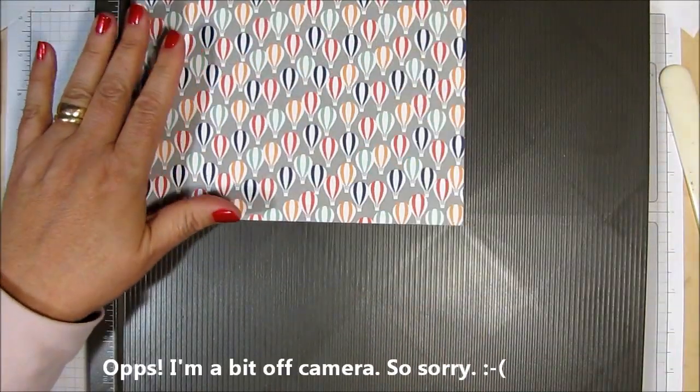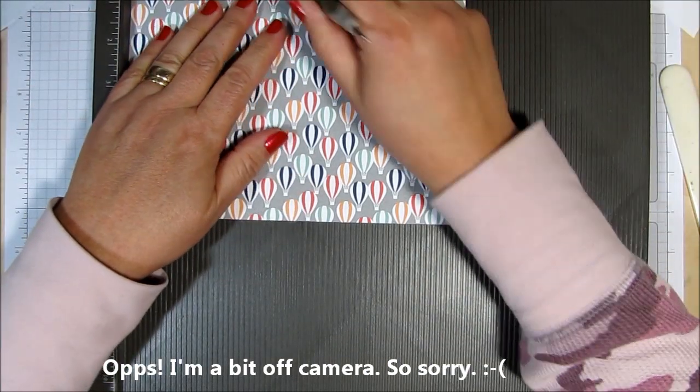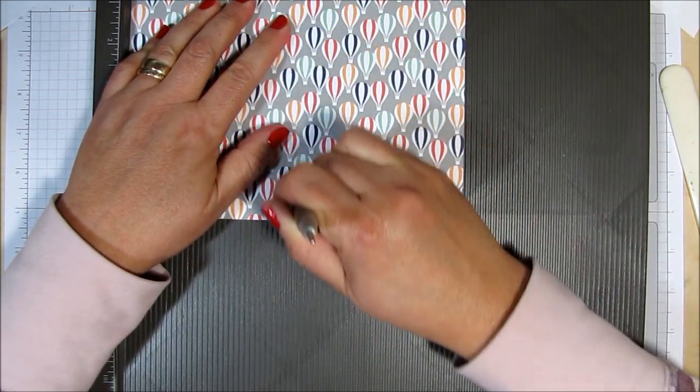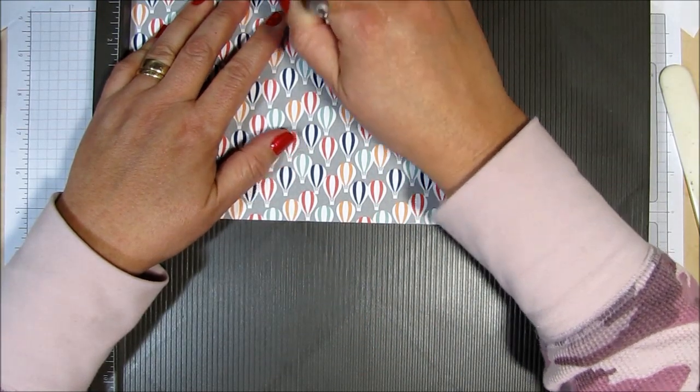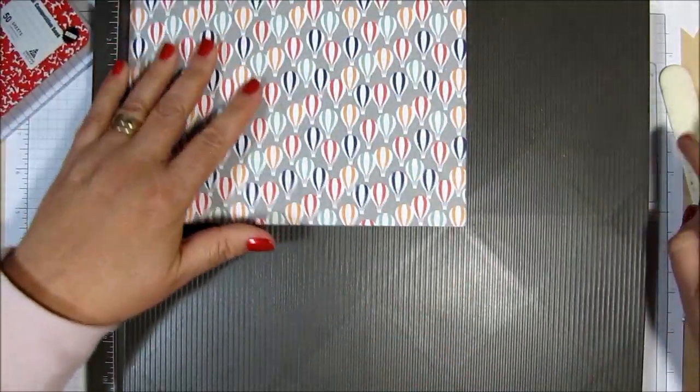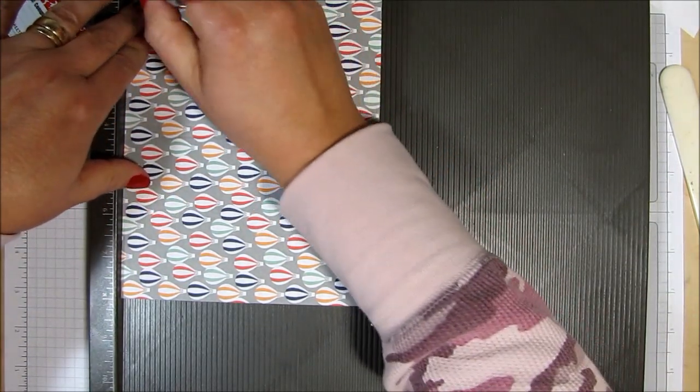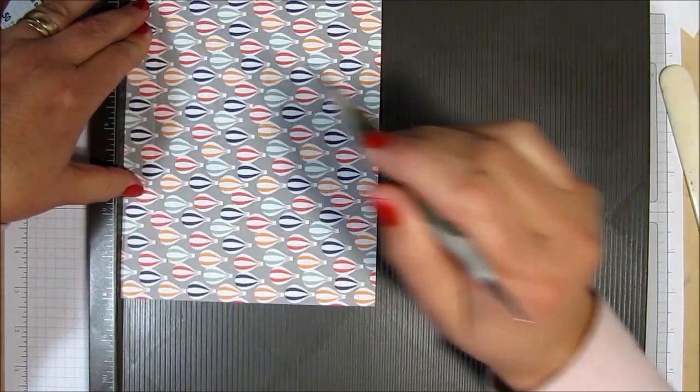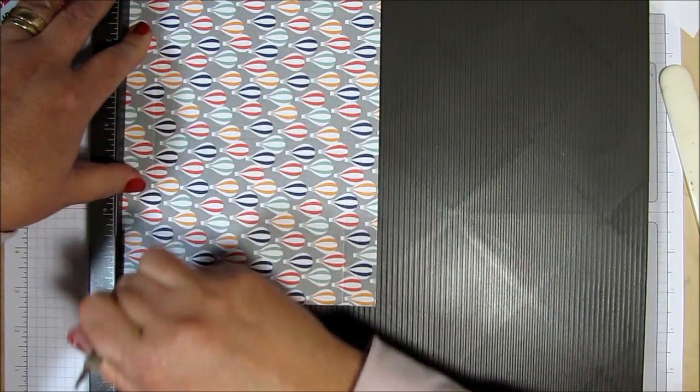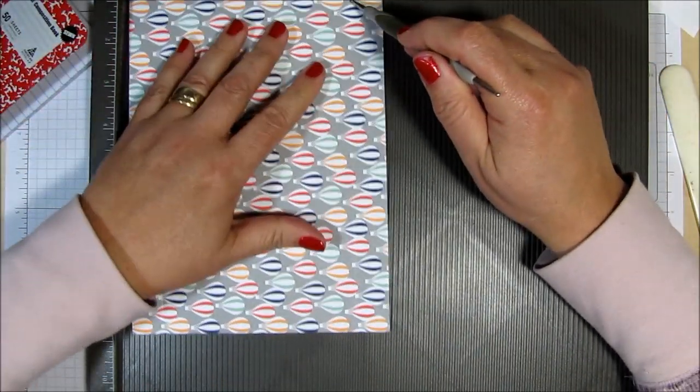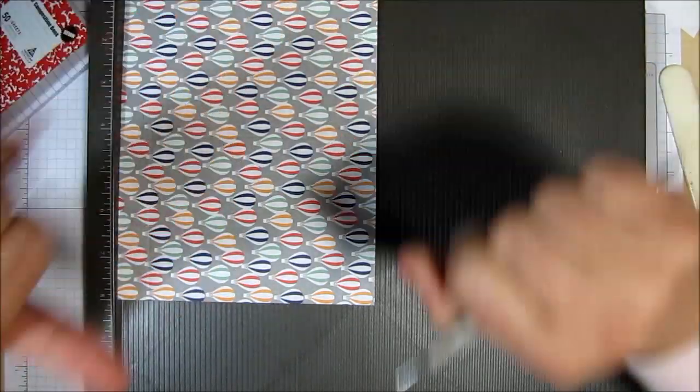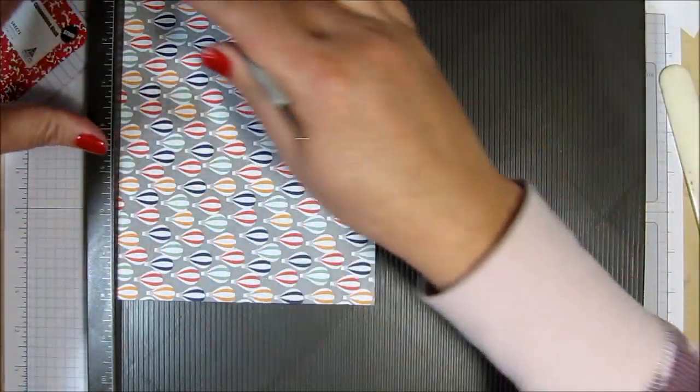So let's get going with this Designer Series Paper and I'm going to bring in my Simply Scored Scoring Tool. And on the 8 inch side, I'm going to score this at 3 and 7 eighths. And then I'm also going to score this at 4 and 1 eighths. And what that's going to do is that is going to give you the right amount of space for the spine right here. And now I'm going to turn this and I'm going to score this at 3 quarters of an inch. And then I'm also going to turn it around 180 degrees and score it again at 3 quarters of an inch.